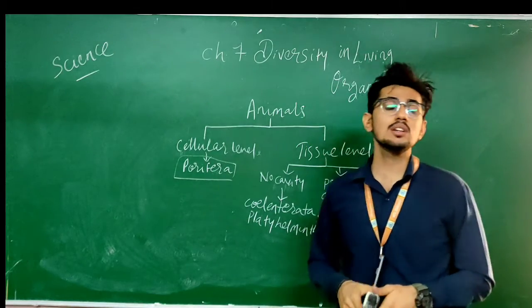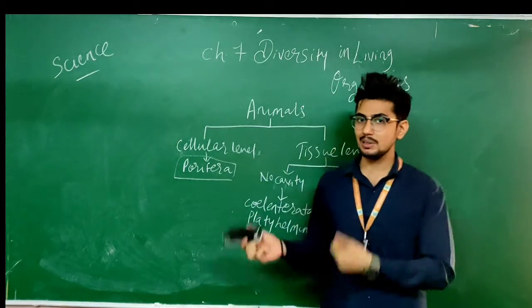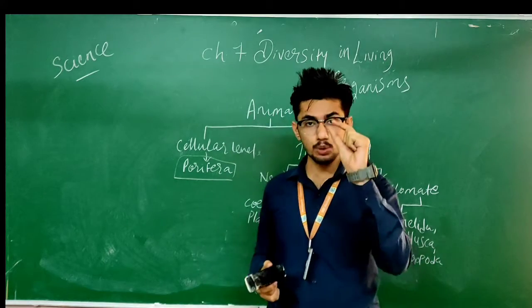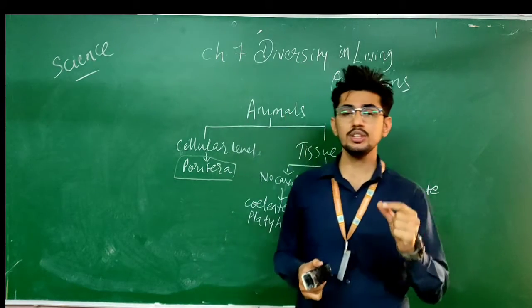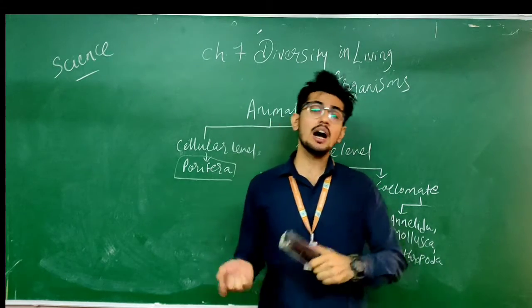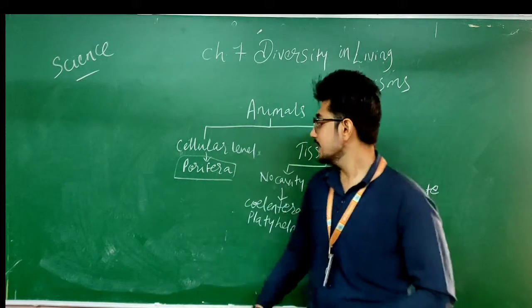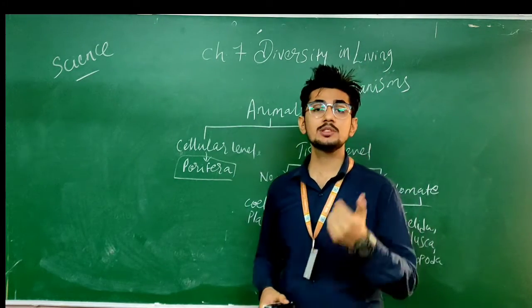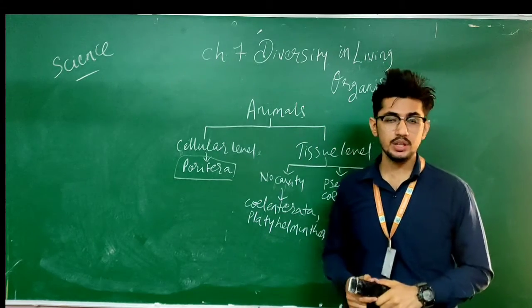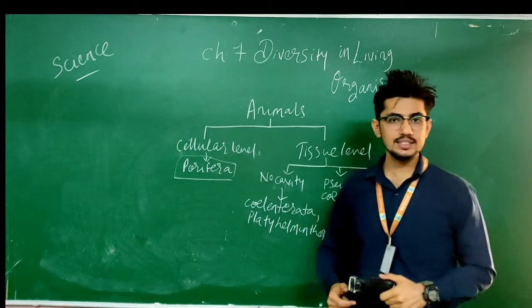Porifera means 'the holes.' So Porifera organisms are predominantly aquatic, meaning they mostly live in water. Their body is completely made up of holes and pores, from which water gets transported and also oxygen gets transported. Their outer skin is something harder, like a skeleton. The example for Porifera is the sponge. This is the first level of classification for Animalia, the cellular level, which is Porifera.